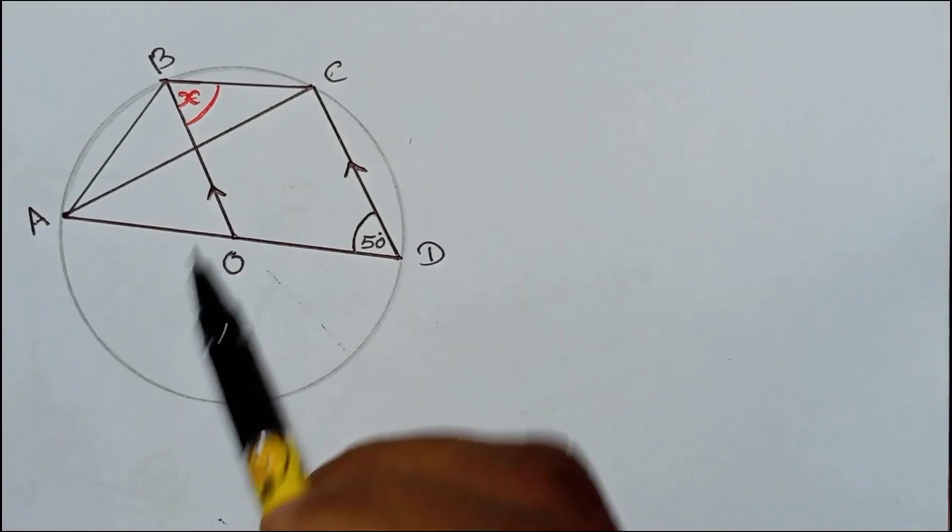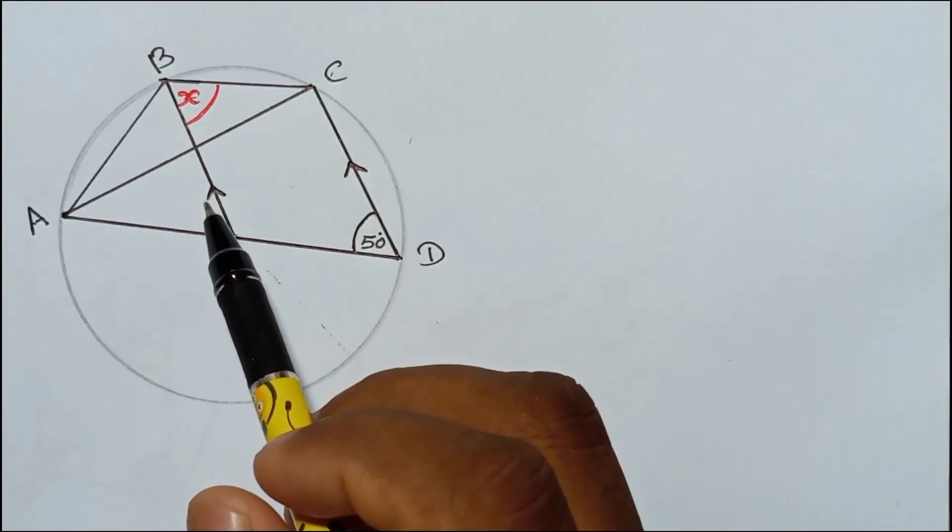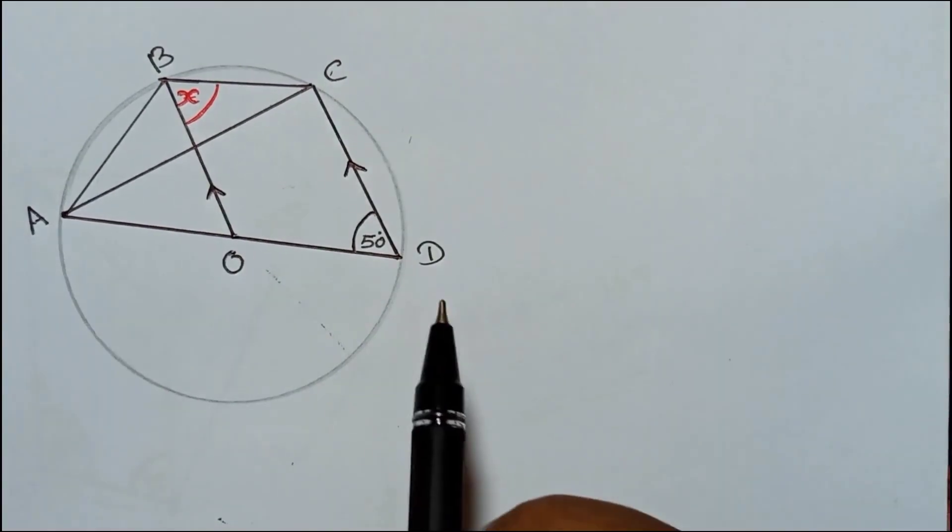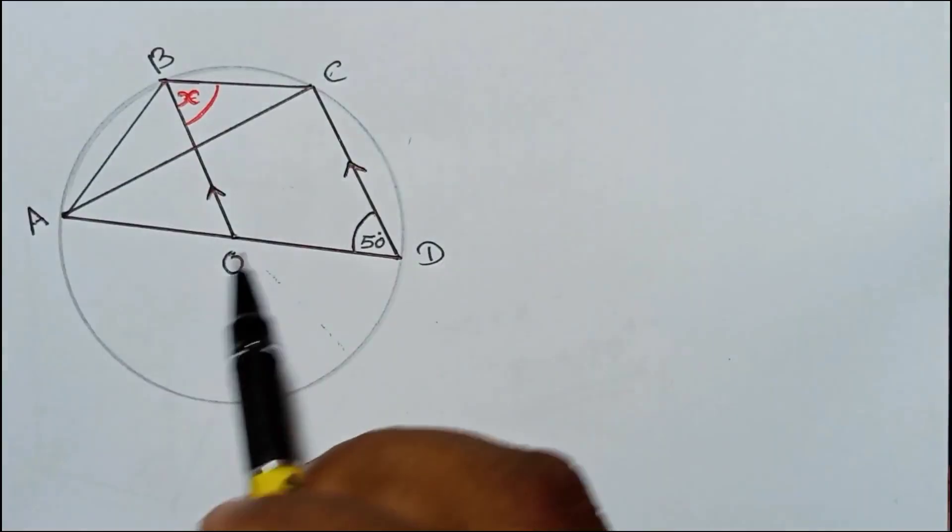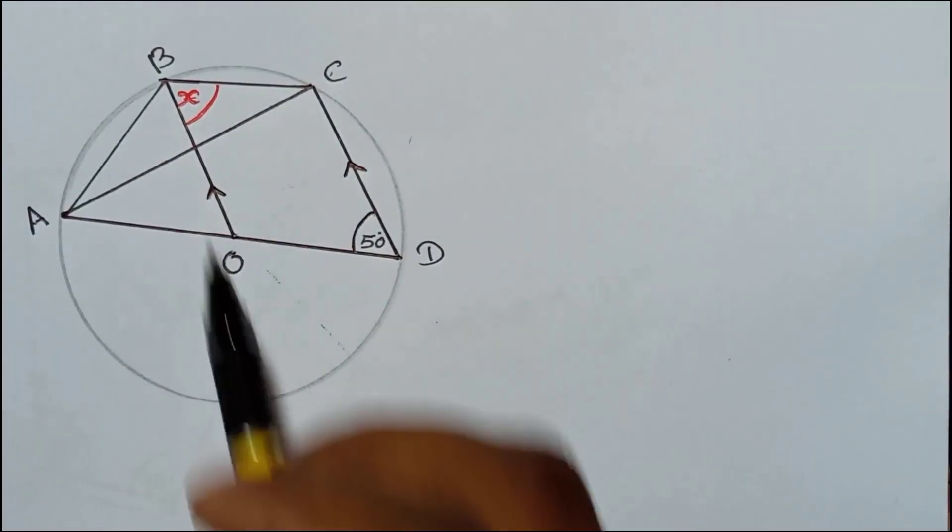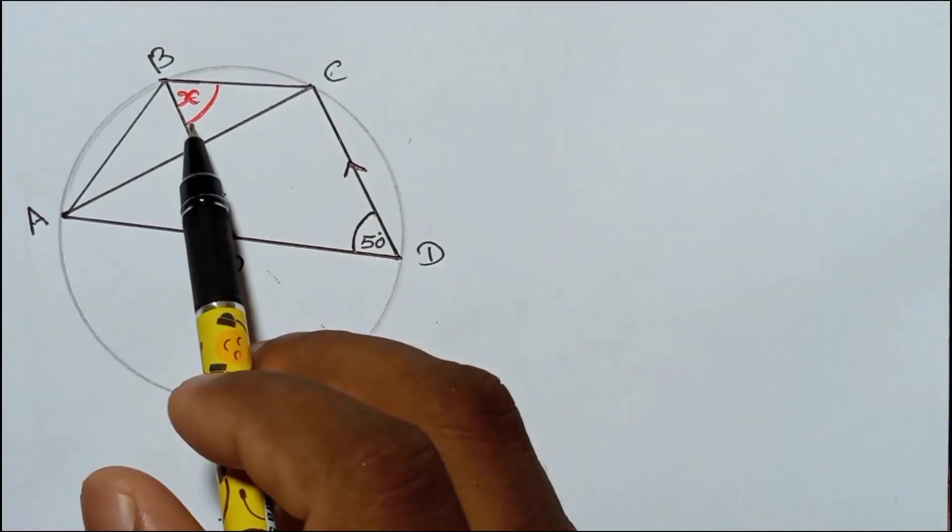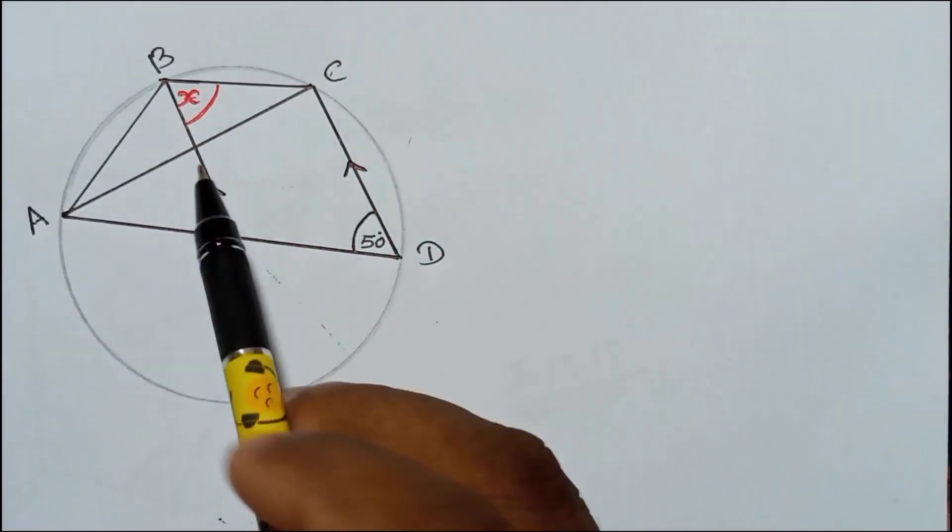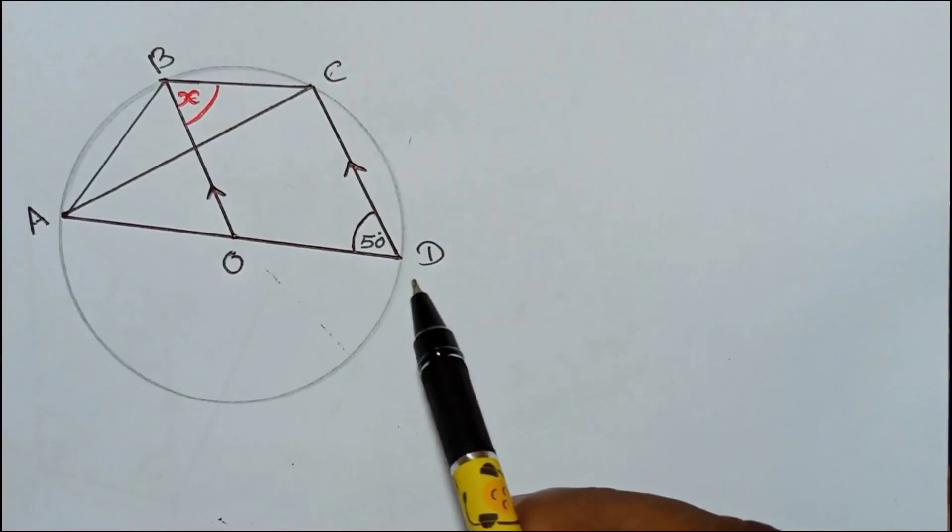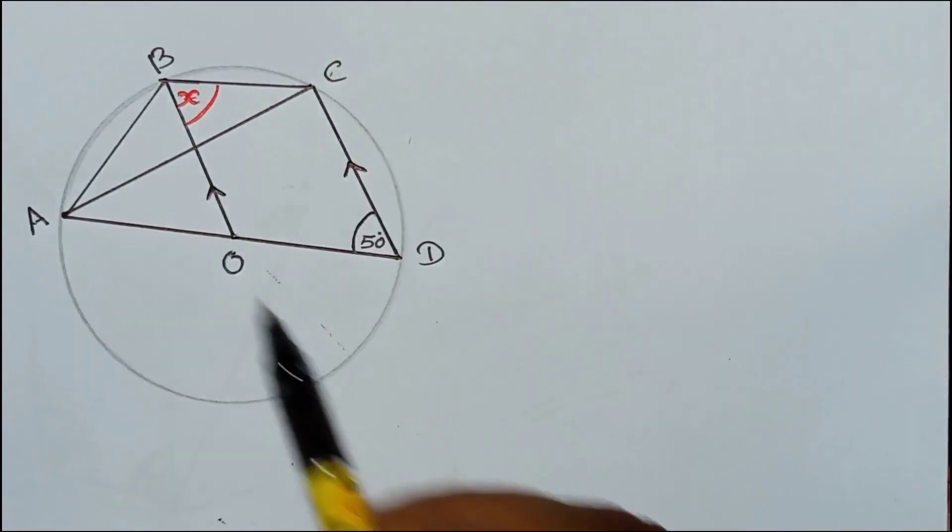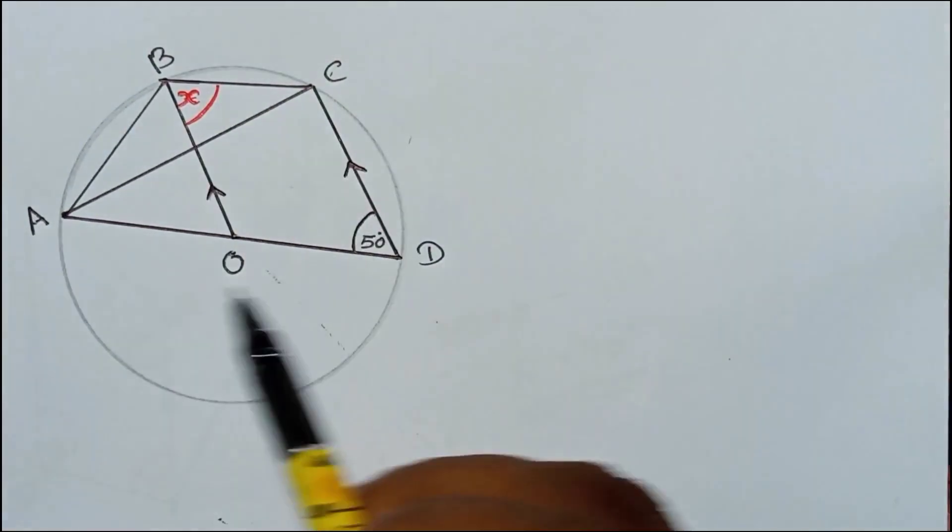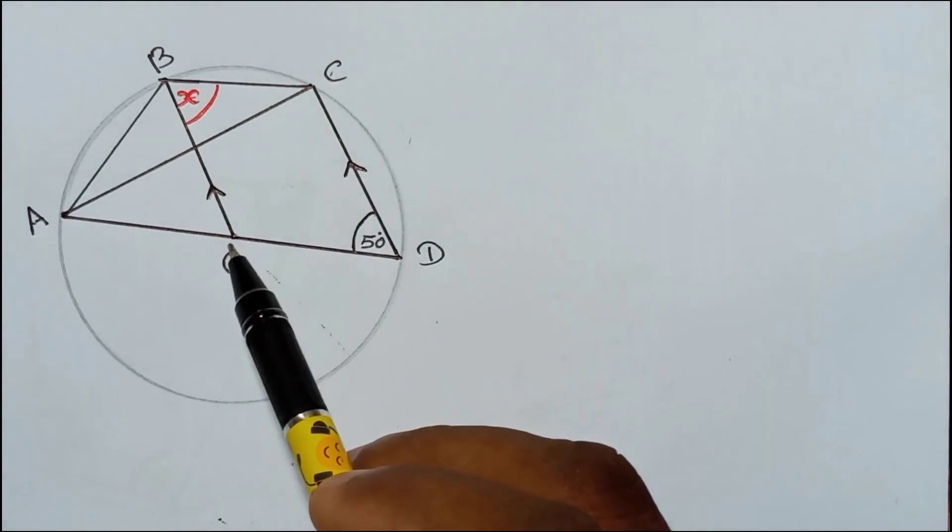Okay, how to find the value of x. Now here, first of all you know some may think about BCDO being a cyclic quadrilateral. No, this is not a cyclic quadrilateral. First of all you should understand that.